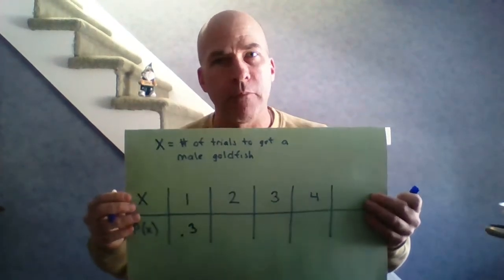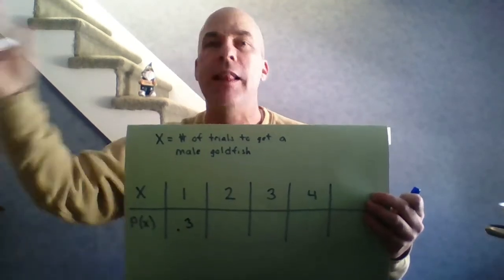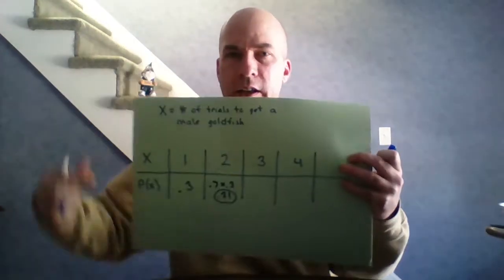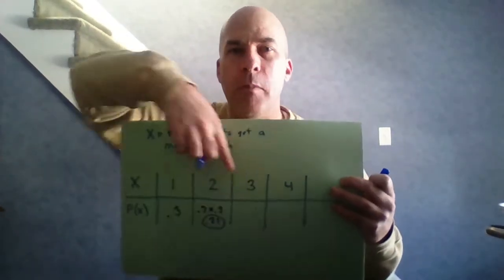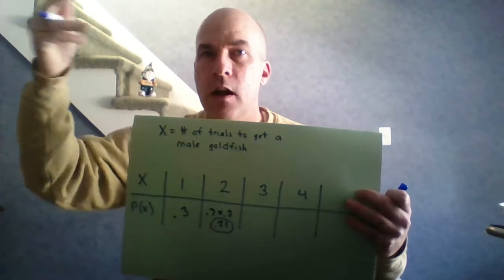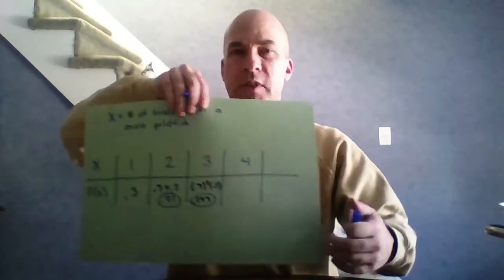What's the probability it takes just one trial? 30% of them are male, so P(X=1) = 0.3. What's the probability it takes two trials? That means fail the first time and succeed the second: 0.7 × 0.3 = 0.21. What's the probability it takes three trials? I'd need to fail the first two times and succeed the third: 0.7² × 0.3, which comes out to 0.147.